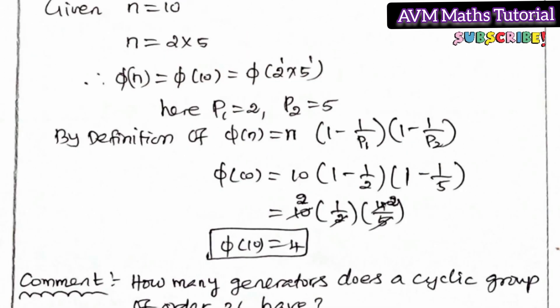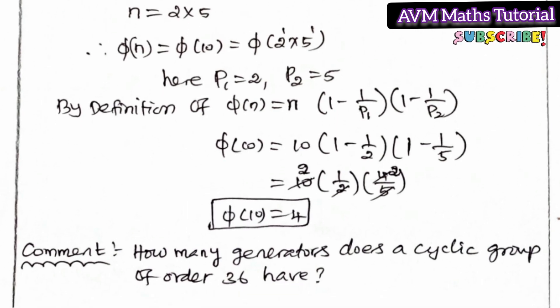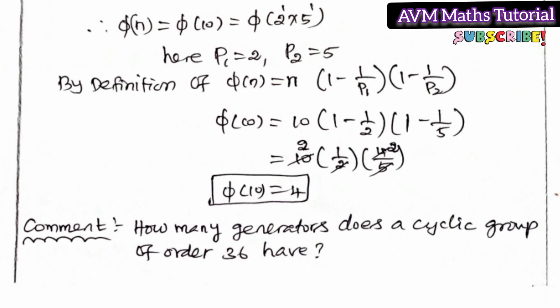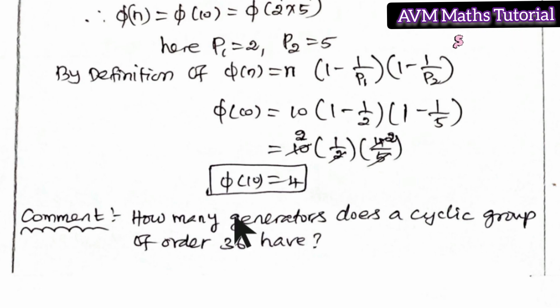The number of generators is 4. So the number of generators of the cyclic group of order 10 is 4. Next, the cyclic group of order 36 — the number of generators of that group is also to be found.